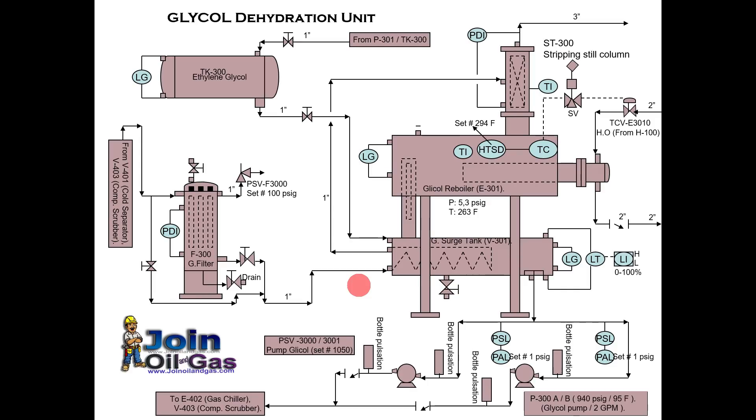So glycol dehydration units are typically represented by the contactor, a flash tank, heat exchanger, and a regenerator as shown in this figure. So here you can see this is the reboiler, below this there is a surge tank or storage tank also.